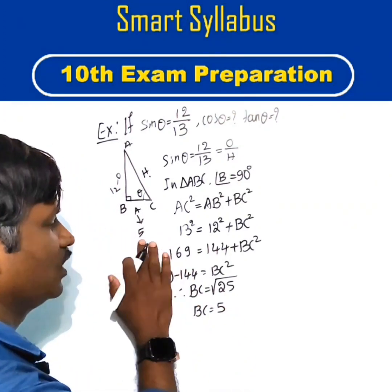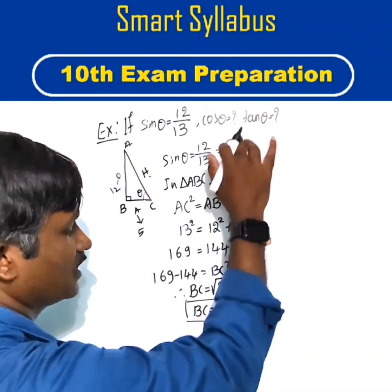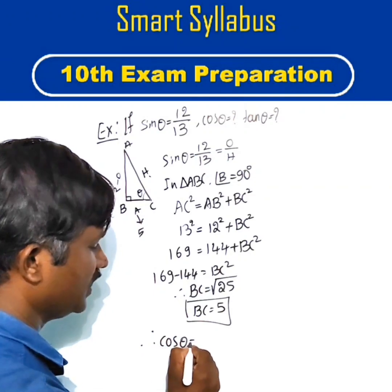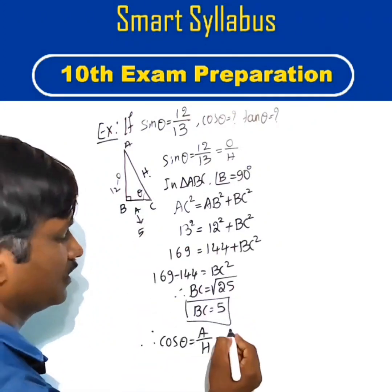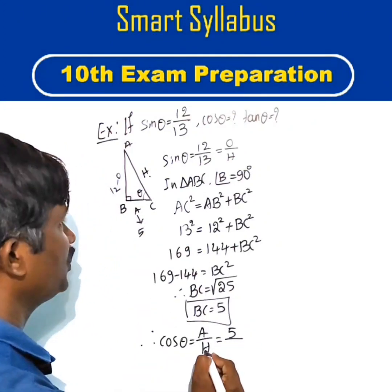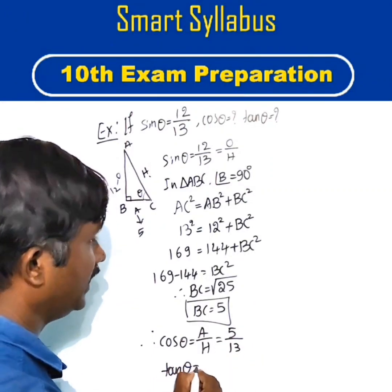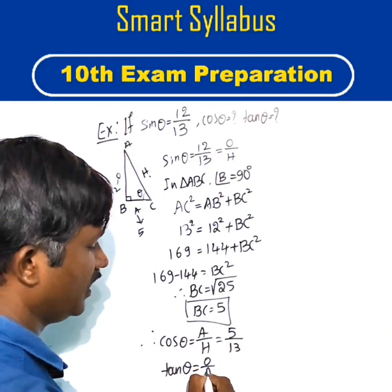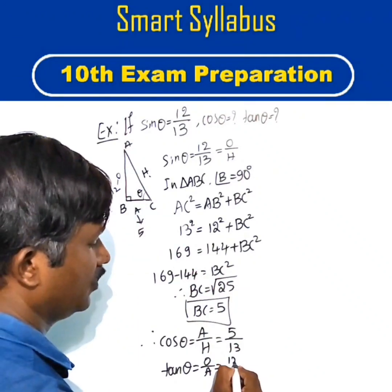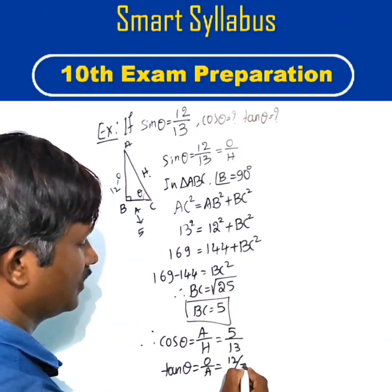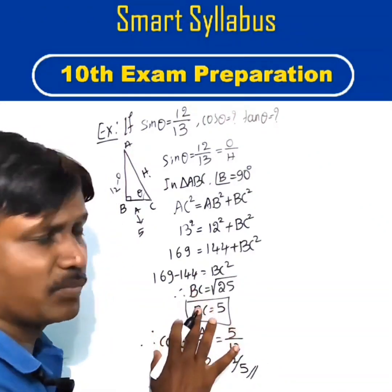The adjacent side is 5. Now we can find cos theta and tan theta. Therefore, cos theta = adjacent side upon hypotenuse = 5/13. Similarly, tan theta = opposite upon adjacent = 12/5.